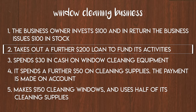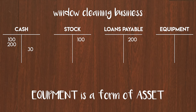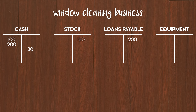In transaction number three the business spends $30 of its cash on window cleaning equipment. So we need to credit cash by $30 to decrease it and debit our new equipment T-account by $30. We record the credit to cash by adding $30 to the right-hand side of the cash T-account since credits always go on the right. Equipment is another form of asset so the debit to equipment goes on the left-hand side.